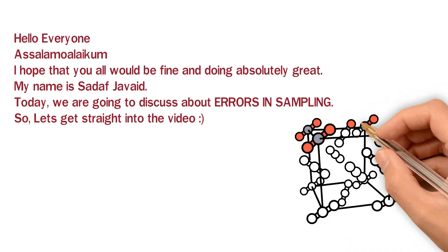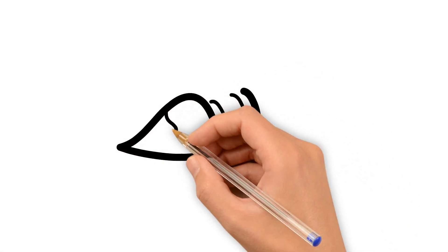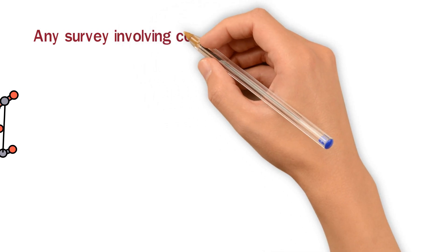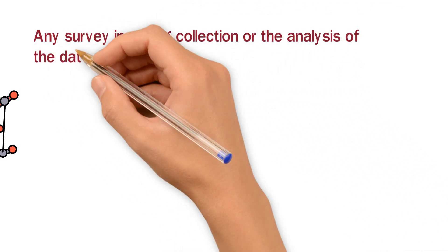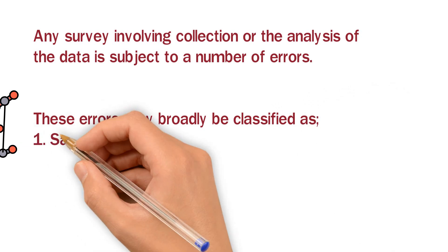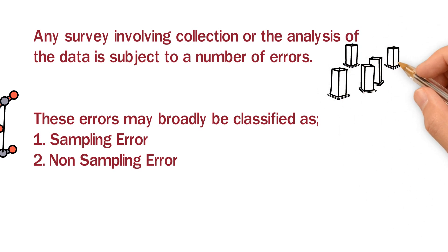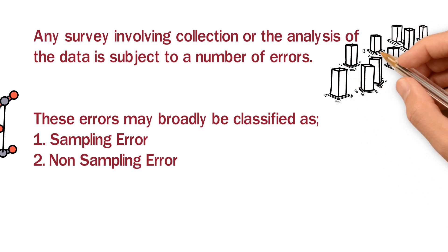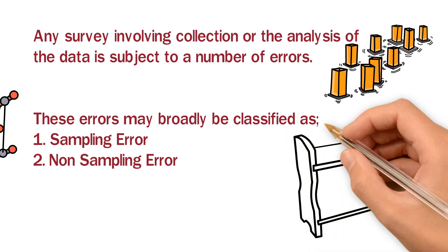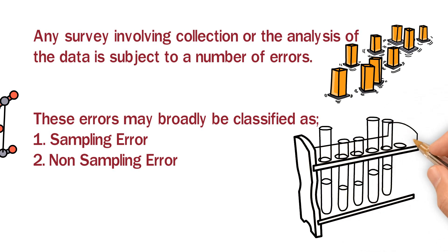The first thing is that we have errors in sampling — what errors we can face. Any survey involving collection or the analysis of data is subject to a number of errors. If we conduct any survey, then we always have errors. We can classify and categorize these errors into two different categories: the first one is sampling error, and the other one is non-sampling error.